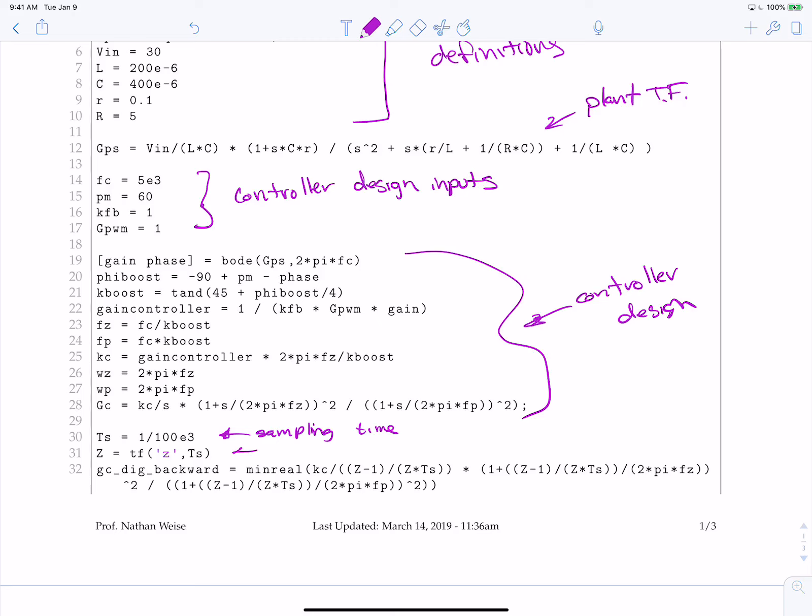So this right here, we're going to create a transfer function z-domain of just z. So z will be a transfer function object in MATLAB, capital Z, that is in the digital domain with the sampling time of 100 kilohertz.